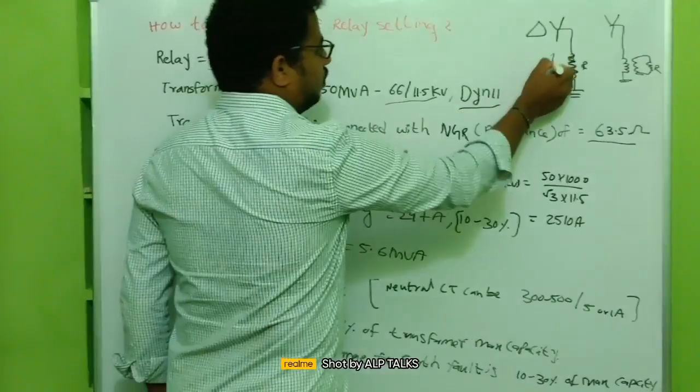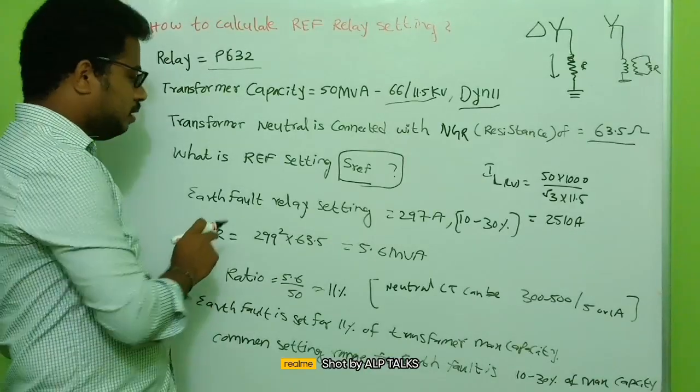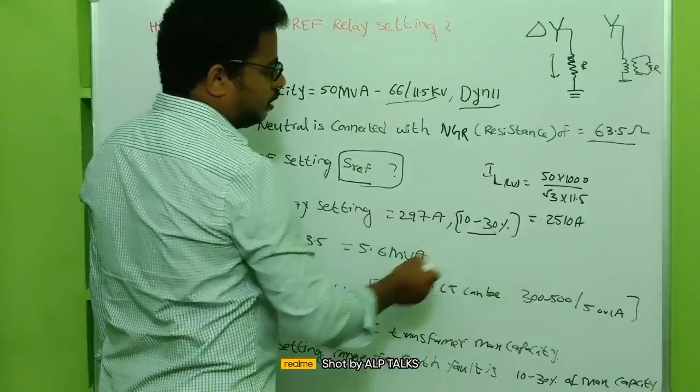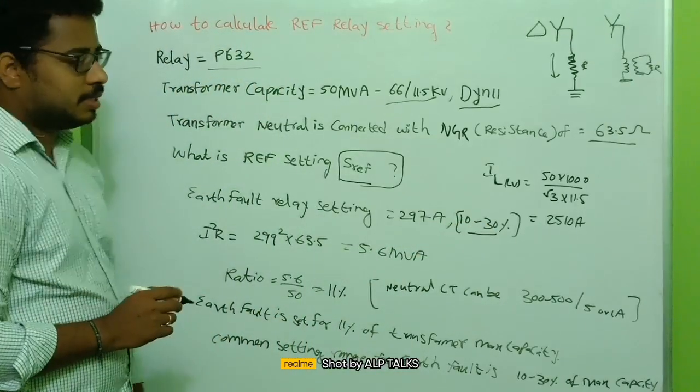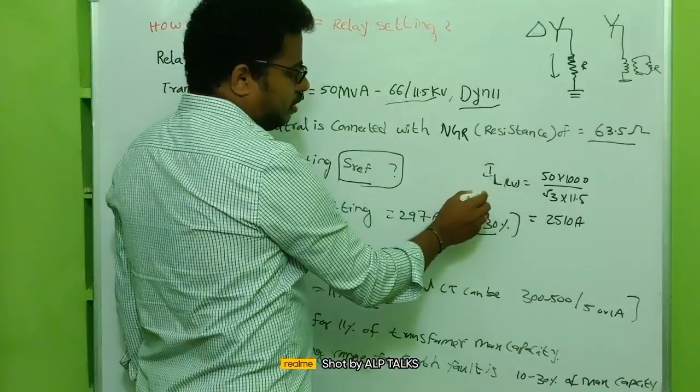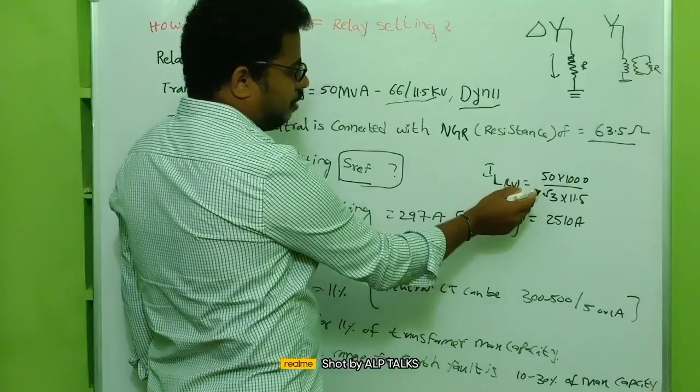Earth fault relay setting. So generally it will be 10 to 30 percent of the rated current of the transformer. For example, here on the LV side if we calculate the current, it is 50 MVA.